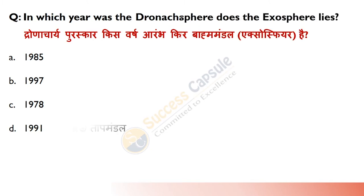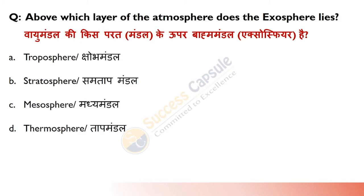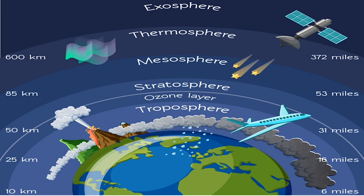Which layer of the atmosphere is just below the Exosphere? Answer is D — Thermosphere. The layers from bottom to top are: Troposphere, then Stratosphere (which contains the ozone layer), then Mesosphere, then Thermosphere, and then Exosphere, which is the outermost layer of Earth's atmosphere.